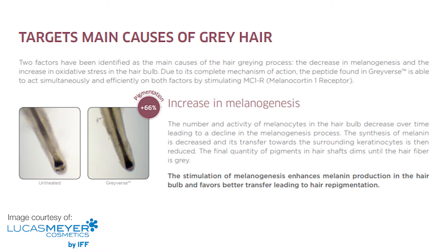Okay so the number and activity of melanocytes in the hair bulb decrease over time. So as you get older it decreases which leads to a decline in the melanogenesis process. So how Greyverse works is it increases the melanogenesis. So you can see here in the picture there is a photo of a hair bulb that is untreated and then next to it there's one that has been treated with Greyverse and you can see that there's about 66% increase in pigmentation there. So really good results there.